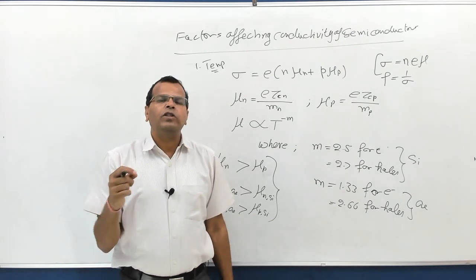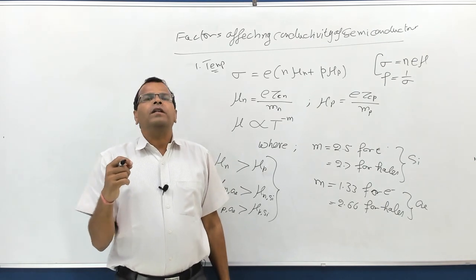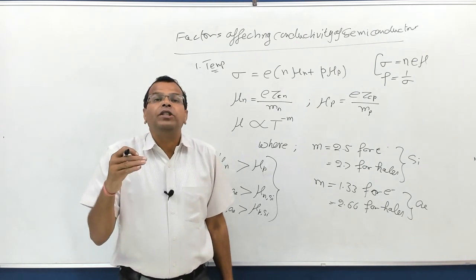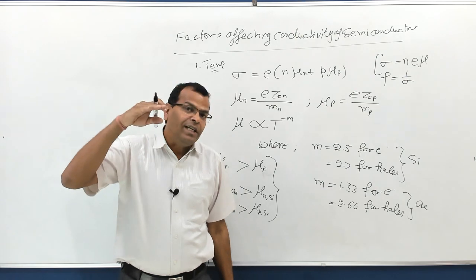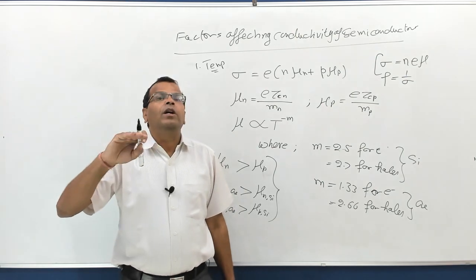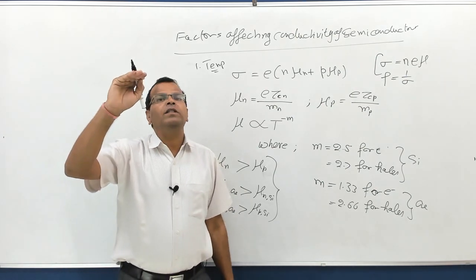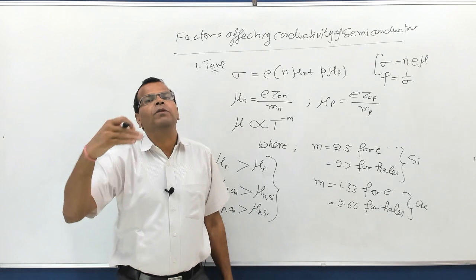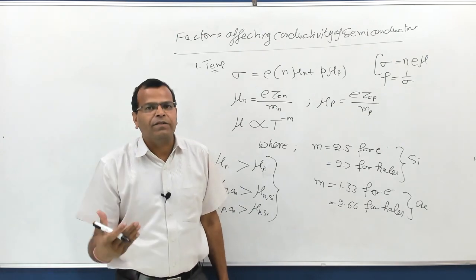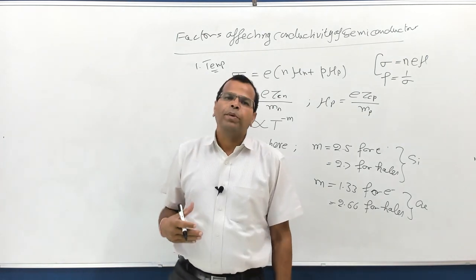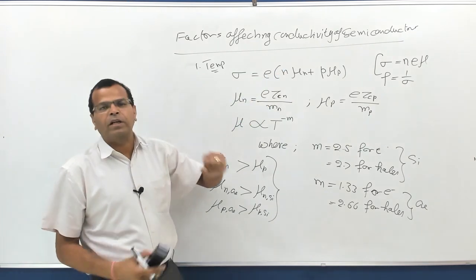Since resistivity ρ = 1/σ, resistivity increases with increase in temperature in case of metals. That is why metals have a positive temperature coefficient. The temperature coefficient is defined as the change in resistivity per unit change in temperature. If temperature increases and resistivity also increases, that gives a positive temperature coefficient. Now coming back to semiconductors.